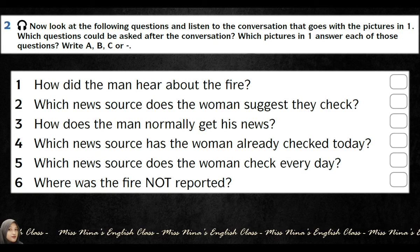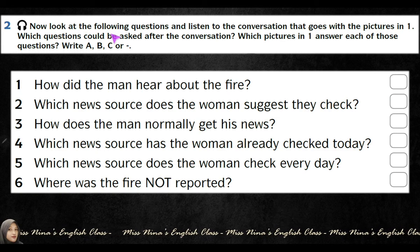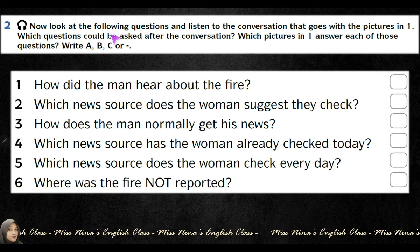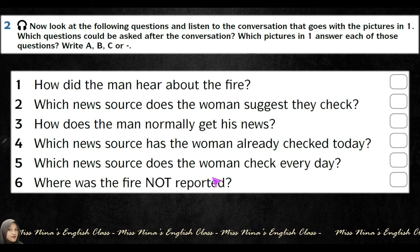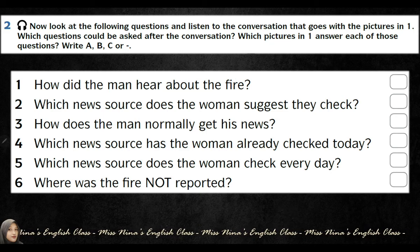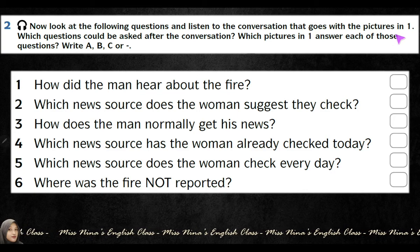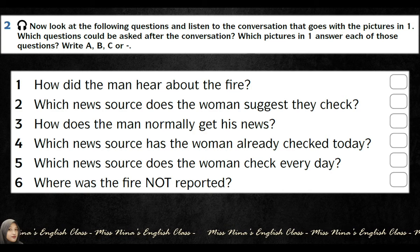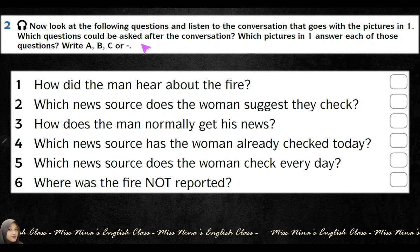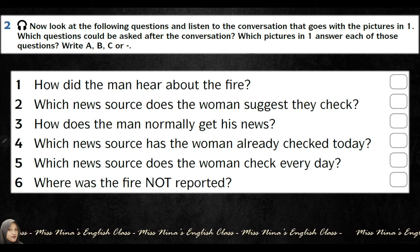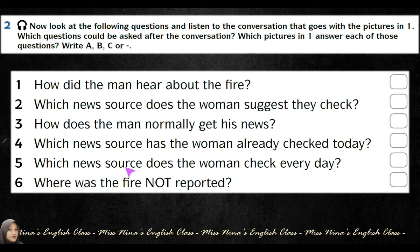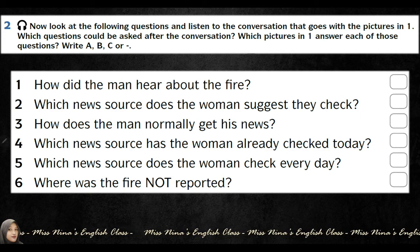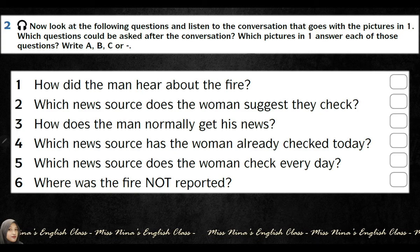Let's move on to activity number two, exercise two. Look at the following questions and listen to the conversation that goes with the pictures in one. There are three things: the question set — ada enam soalan — the conversation, and the pictures: radio, internet, newspapers. All three things are related to one another. If the conversation is talking about, say, a flood, and question one asks 'how did the man hear about the fire?' — it's not related, because the conversation is about flood but the question is about fire.